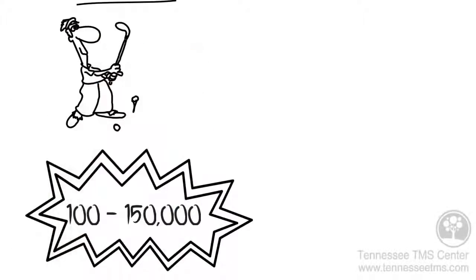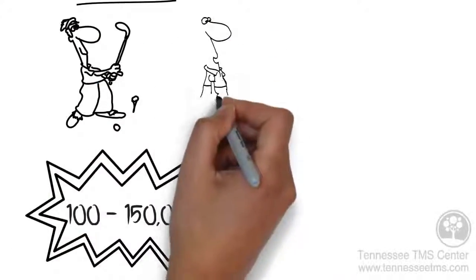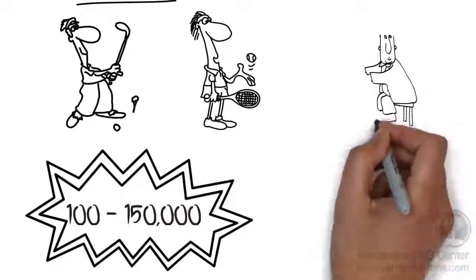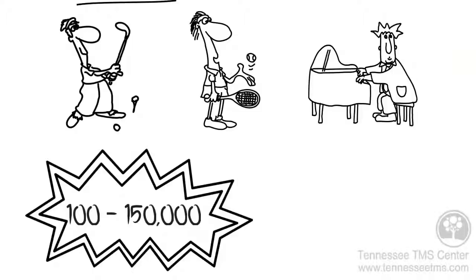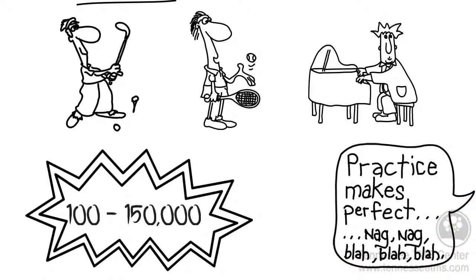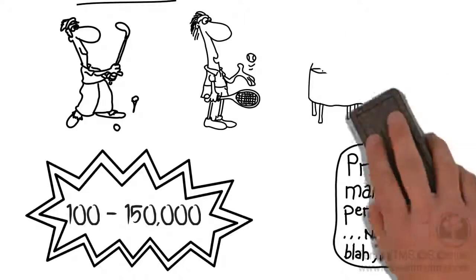Now, imagine practicing a golf swing, or tennis serve, or a song on the piano 100,000 to 150,000 times. You'd get pretty good at it. It's just like mom and dad said when you were growing up, practice makes perfect. And that's a lot like what the TMS process is.